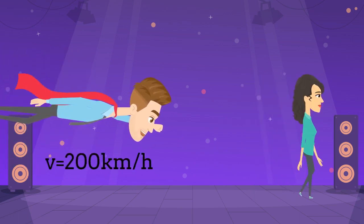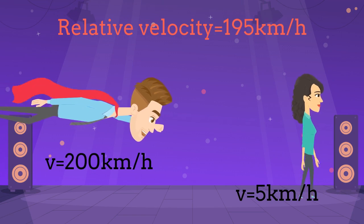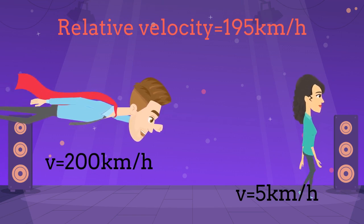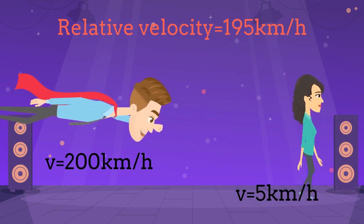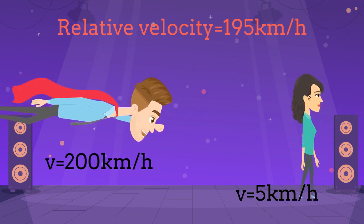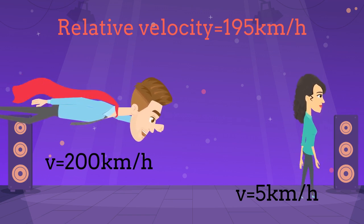For understanding why we can travel in time, let's first analyze the concept of relative velocity. Imagine that Charles is flying with a magnitude of velocity of 200 km per hour. Adriana is then walking away from him at 5 km per hour. Their relative velocity is naturally 195 km per hour, which is the subtraction of the two velocities.